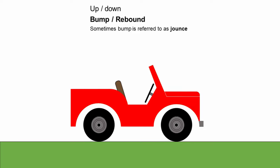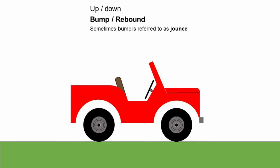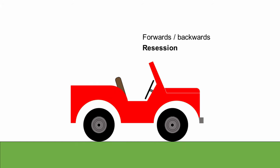That up and down motion we refer to as bump and rebound. When the wheel is going up towards the body that's bump, and when the wheel is going down away from the body that's rebound. The wheel can also move forwards and backwards relative to the body and we call that recession. We very rarely want forwards and backwards movement in suspension, but we usually have to accept it as a side effect of the way we engineer the movement of the wheel.